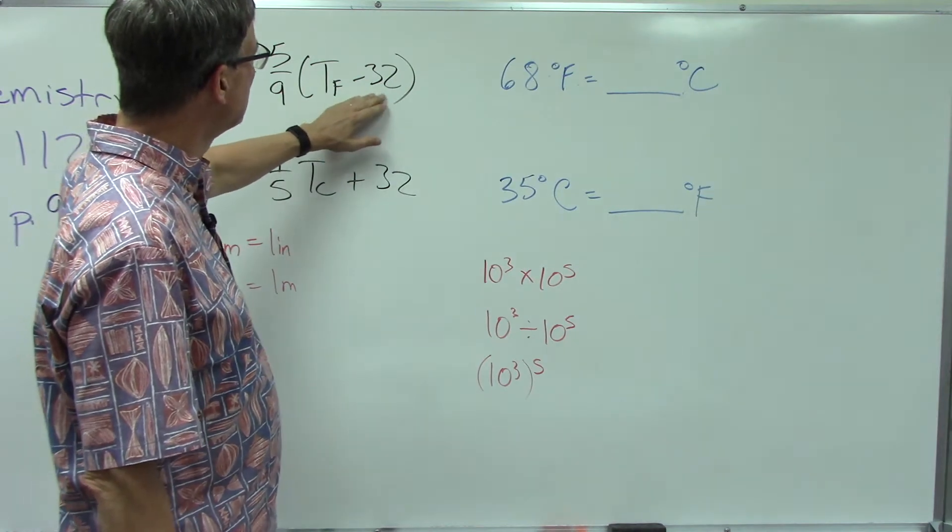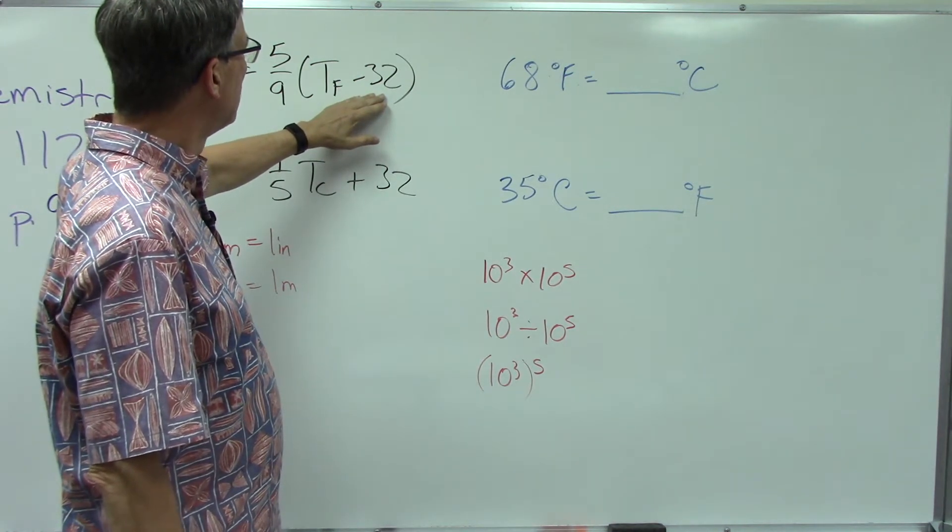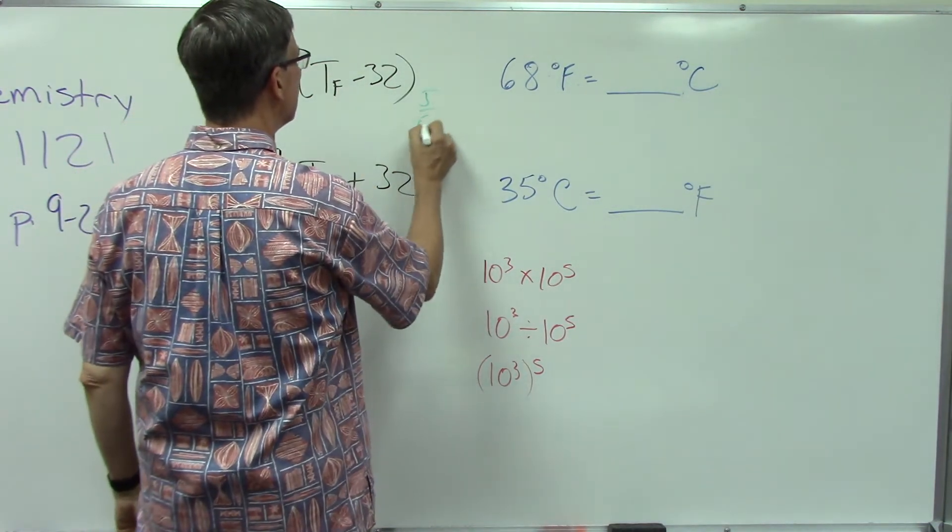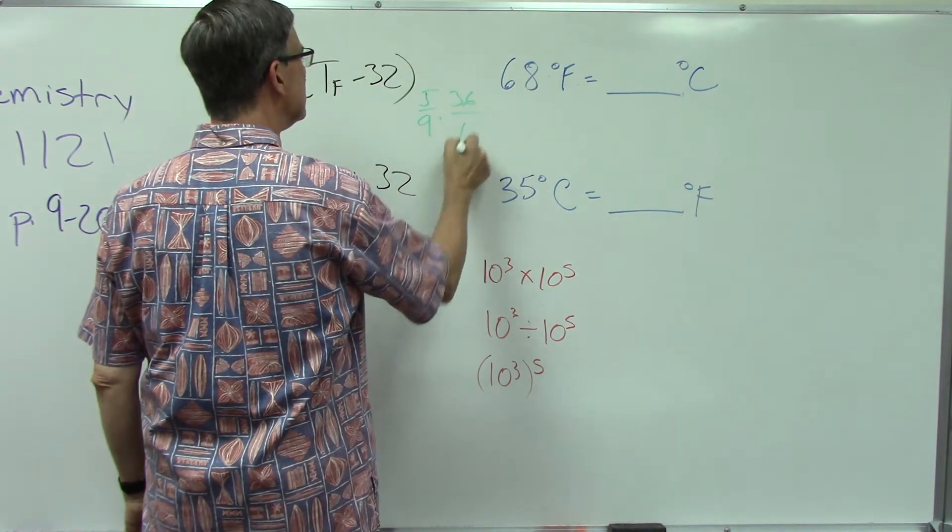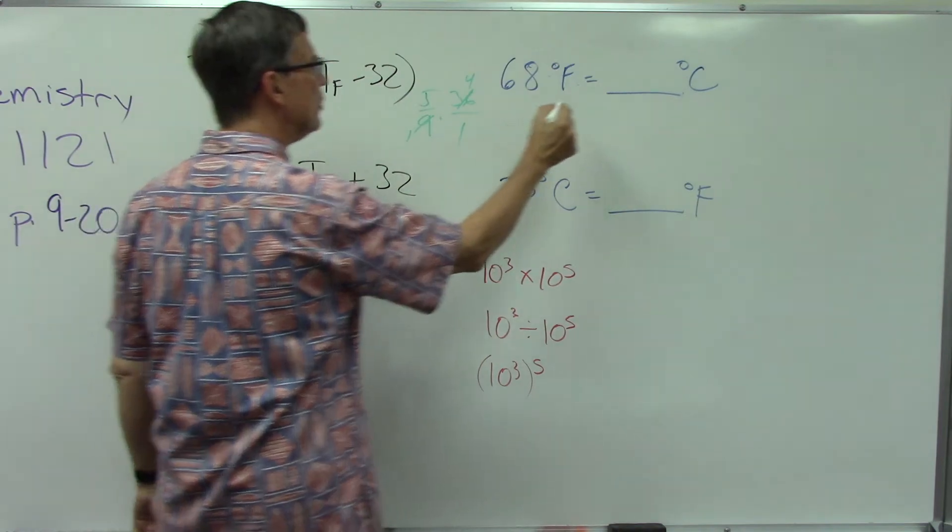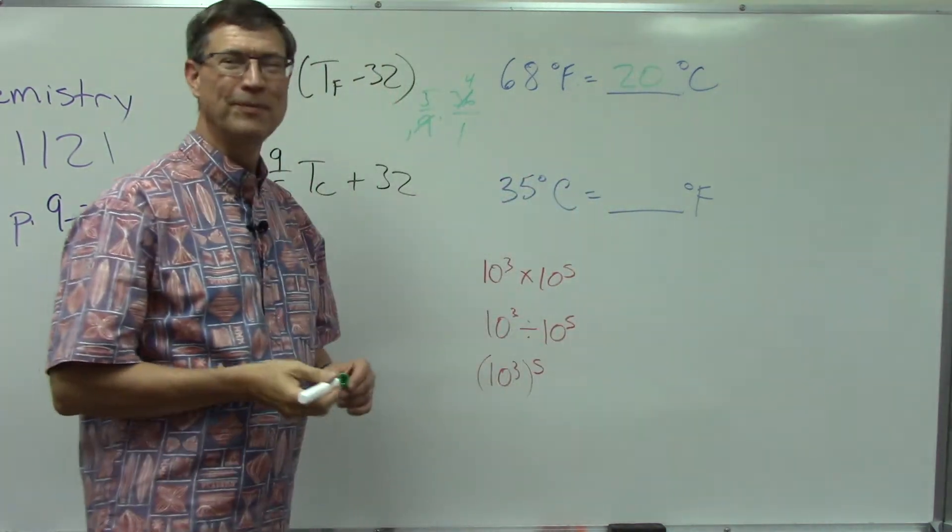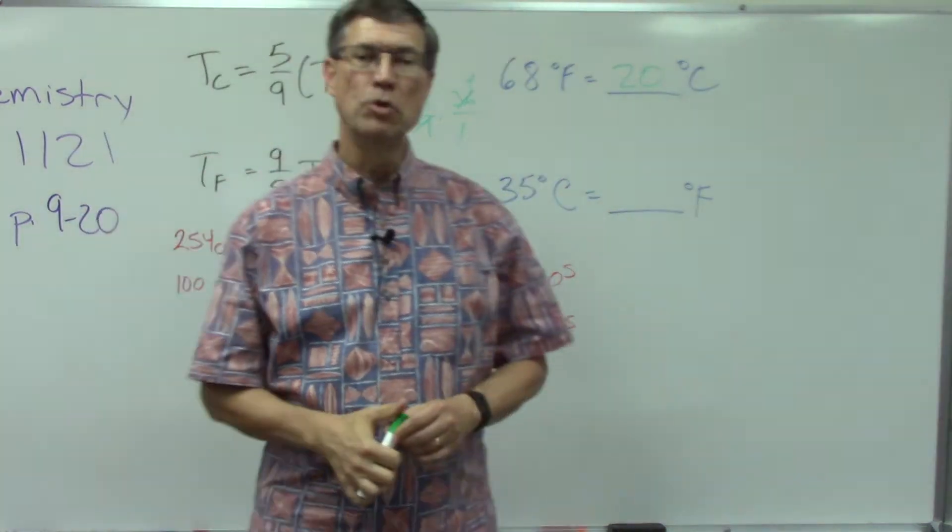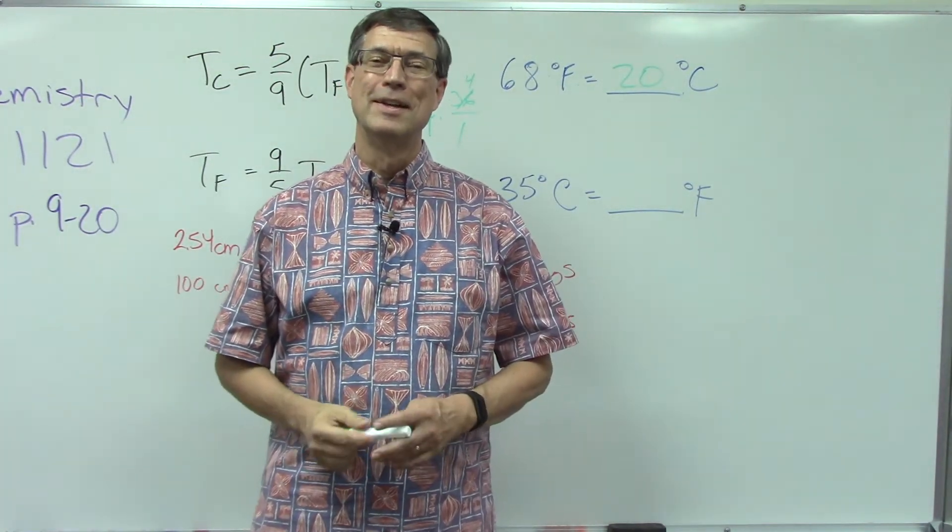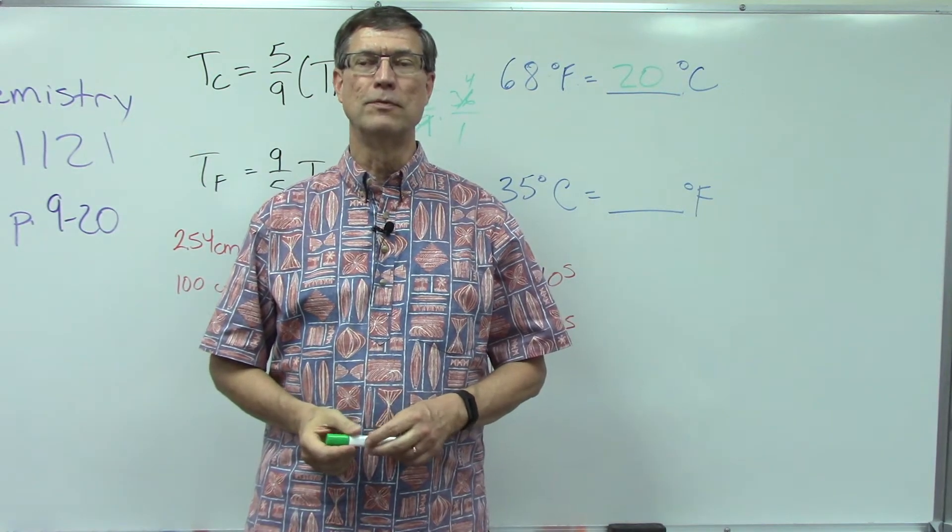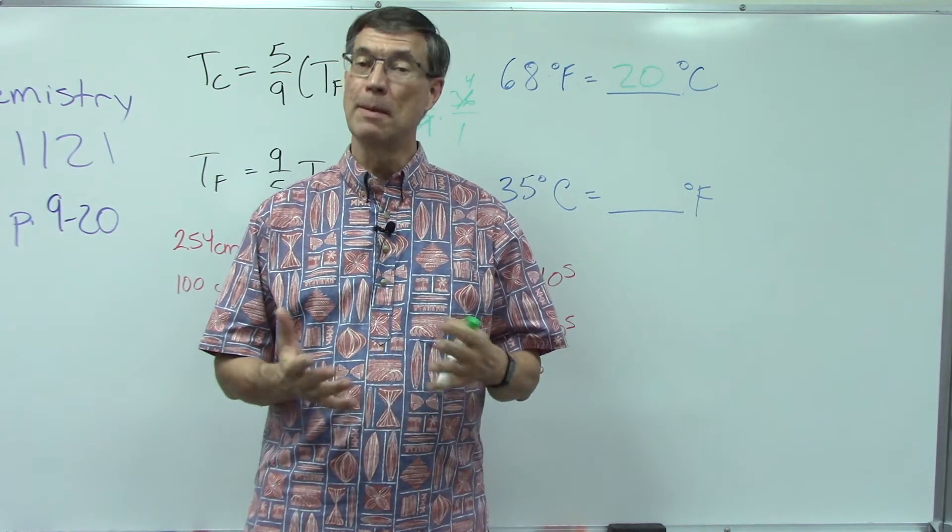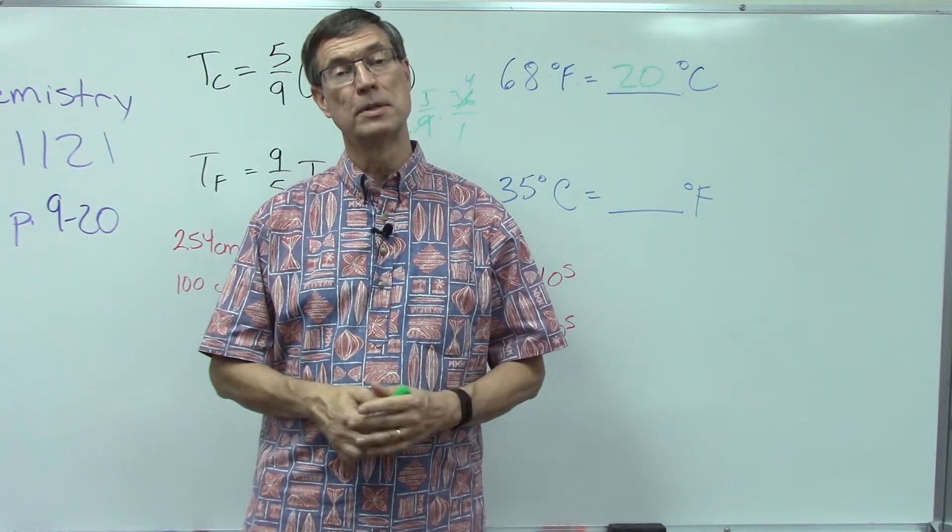Here we go: 68 Fahrenheit, we'll plug that in. 68 minus 32 would be 36, right? So now we can take 5/9 times 36, so I can cancel, and so that would be 5 times 4, which is 20 degrees Celsius. And some of you watching this video, you may actually live in countries, in fact most of the world uses Celsius. The United States is one of the few countries that uses Fahrenheit.